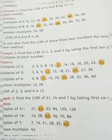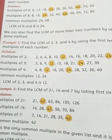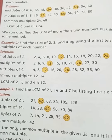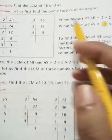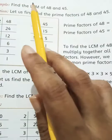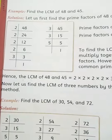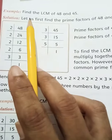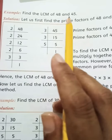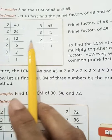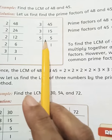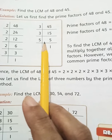Okay, clear? Come to page number 44. This is page number 44 — right the date and day over here as well. Now here the example is: find the LCM of 48 and 45.